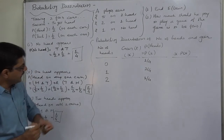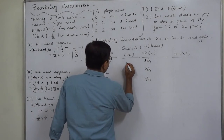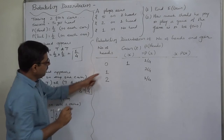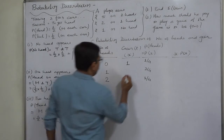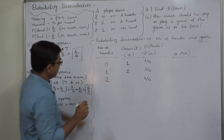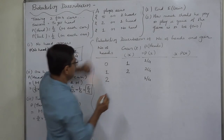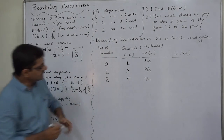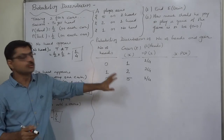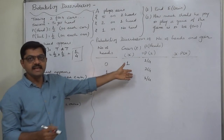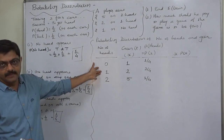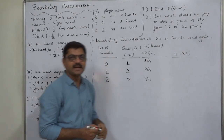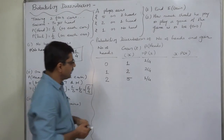Now: if no head occurs, a gain of rupee one; if one head occurs, a gain of rupees two; and if two heads occur, a gain of rupees five. This itself is the probability distribution of gain, because gain is dependent on the number of heads appearing.